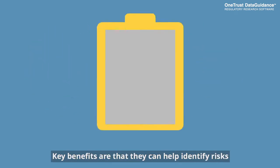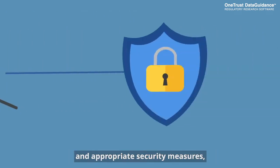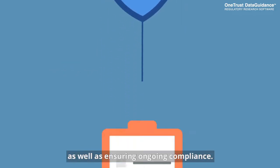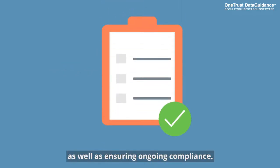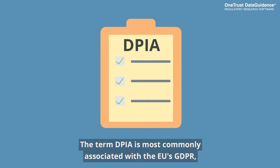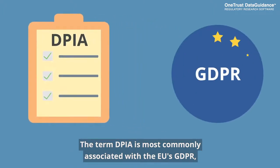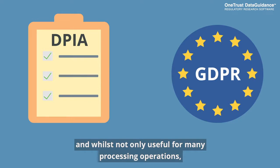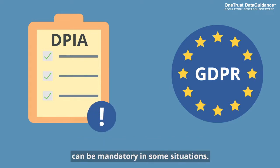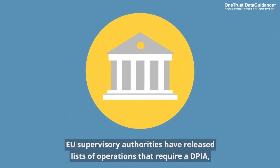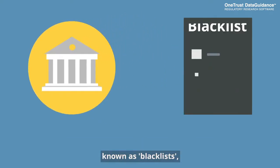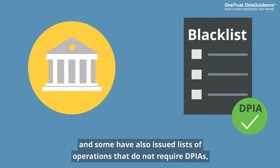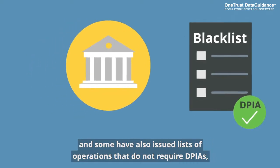Key benefits are that they can help identify risks and appropriate security measures, as well as ensuring ongoing compliance. The term DPIA is most commonly associated with the EU's GDPR, and whilst not only useful for many processing operations, can be mandatory in some situations. EU supervisory authorities have released lists of operations that require a DPIA, known as blacklists, and some have also issued lists of operations that do not require DPIAs, known as whitelists.